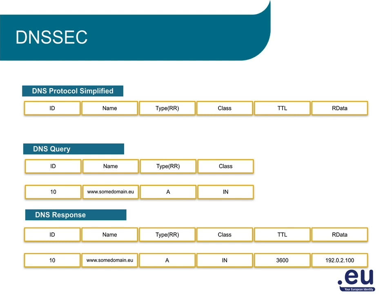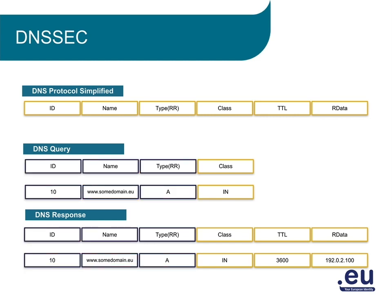When a network device — which can be a PC, a server, a nameserver, or something else — sends a DNS query and gets a response, the network device will check if it comes from the correct IP address and if the ID, the name, the resource record type, and the class are the same. If they are the same, the network device will consider that response as the answer to the query. This mechanism is used on all network devices, also on caching nameservers. If another response comes in with the same values afterwards, this packet will be ignored. Only the first will be handled and taken as the correct one.